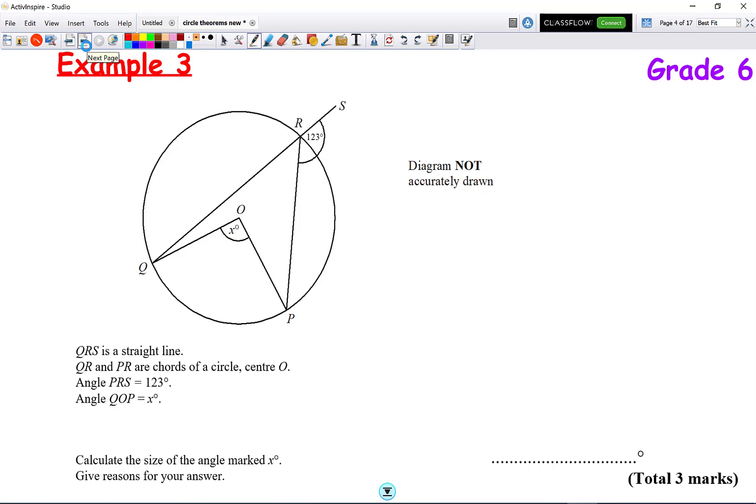Welcome back. Okay. So, here we have a question, again, with an arrowhead. Now, we've got the angle at the centre is X, and we need to work out what X is. But the question is, where is the angle at the circumference? Well, it is here.